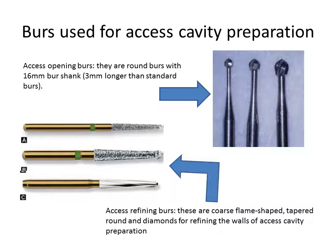For the burs used in root canal treatment, we have the round bur with a long shank, about 13–16 mm long, in sizes number 4 and number 6. These are used to remove the roof of the pulp chamber and to excavate the pulp horn tissues. Then the non-cutting-end fissure burs — diamond or carbide — are used to provide the diverged cavity and remove all unsupported enamel.